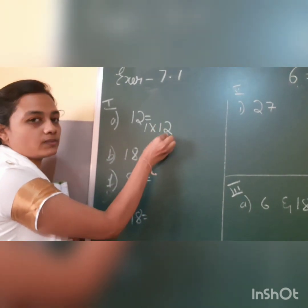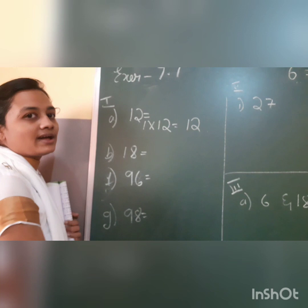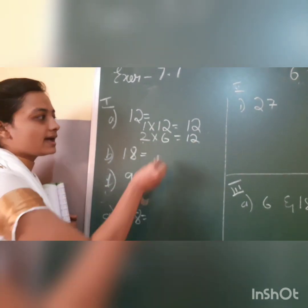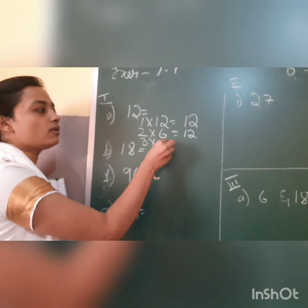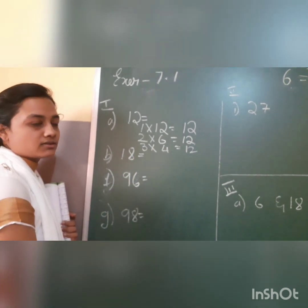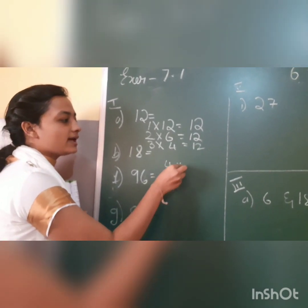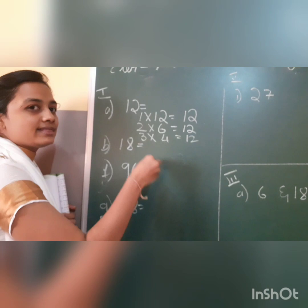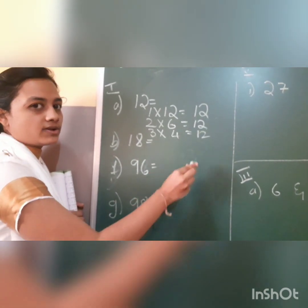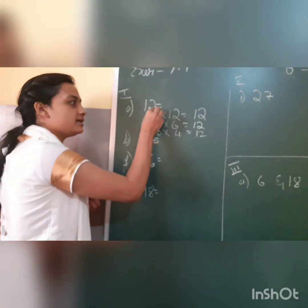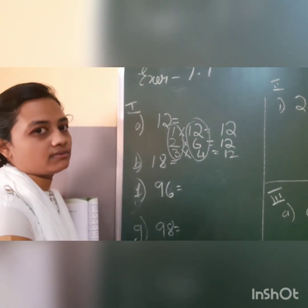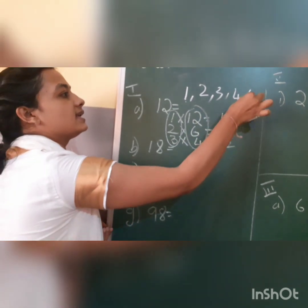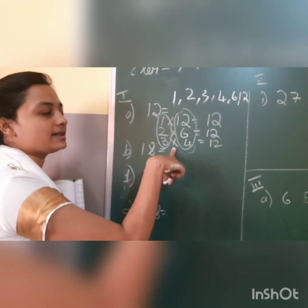I will start from 1: 1 × 12 = 12, so 1 and 12 are factors. Now I take 2: 2 × 6 = 12, so 2 and 6 are also factors. Now go to 3: 3 × 4 = 12, so I got 3 and 4. When I go for 4, I again get 4 and 3, which I already have. When the factors repeat, I stop. So the factors of 12 are: 1, 2, 3, 4, 6, and 12.